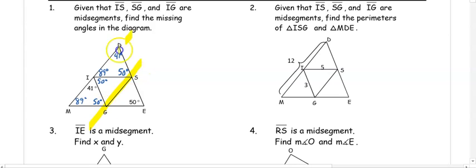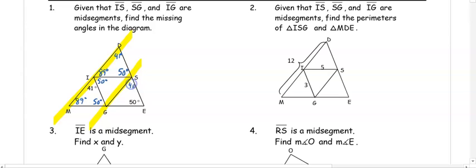Using these parallel lines, we also know that 41 and angle S are congruent. To get the angles missing in the center triangle, we can find that the angle missing from the group of 50 and 41 is 89. In this last triangle, we're missing an 89-degree angle, so in this last group, we are missing a 41-degree angle.